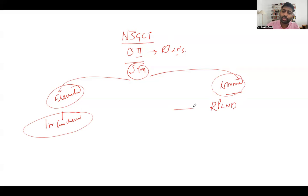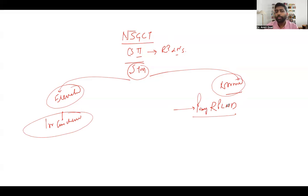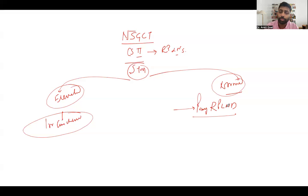The type of RPLND offered as the first line of management, when markers are normal with positive retroperitoneal lymph nodes on CT scan, is known as primary RPLND.